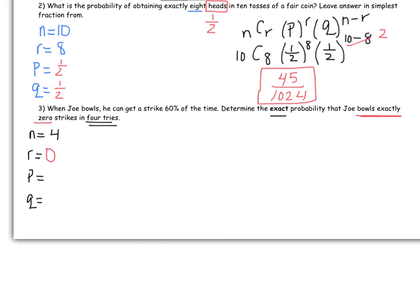And what is the probability P that he actually gets a strike? Well, it tells you right here, 60% of the time. And we can put that in as 0.6 or 0.60. It's appropriate to put it in as a decimal. And what would be my Q? What's the probability that he doesn't get a strike? Well, then we would say 0.4.